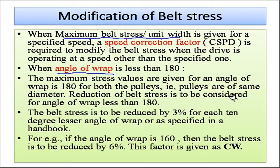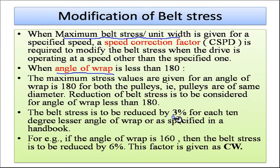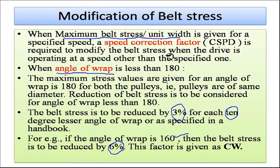Maximum stress values are given for an angle of wrap of 180 degrees, where both pulleys are of the same diameter. A reduction of belt stress must be considered for angles of wrap less than 180 degrees — the belt stress is reduced by 3% for each 10 degrees lesser angle of wrap as specified in the handbook. For example, if the angle of wrap is 160 degrees, the belt stress is reduced by 6% because 20 degrees less corresponds to 3% + 3% = 6% reduction. This angle of wrap factor is given as C_w.